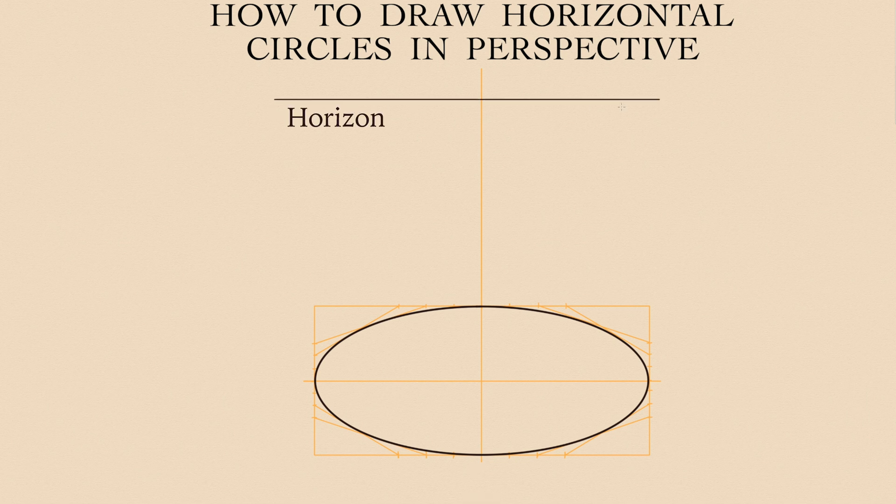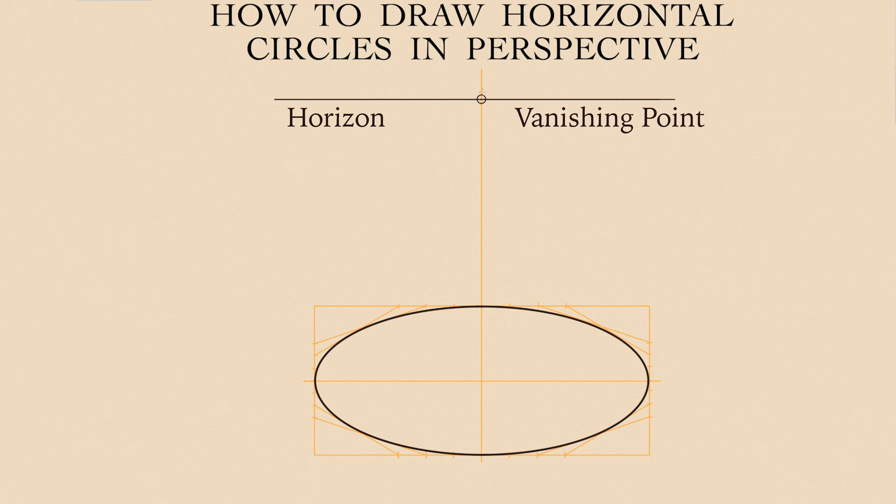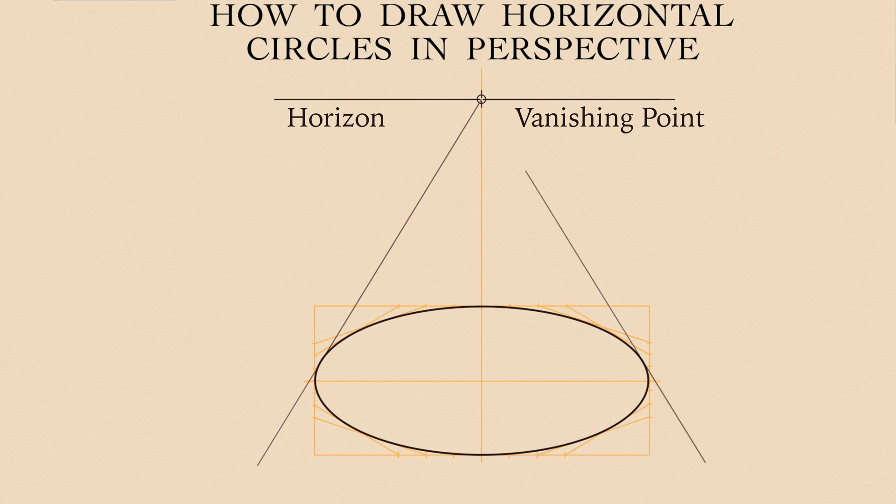Now let's draw a line of horizon. The vanishing point is placed on this line. Two vanishing lines connect that point with the ellipse edges. They form a square in one-point perspective around that ellipse.